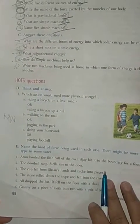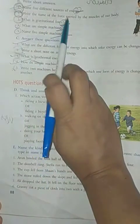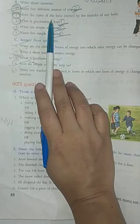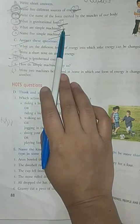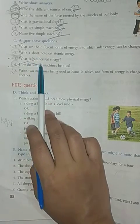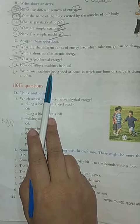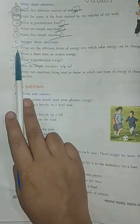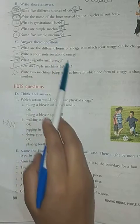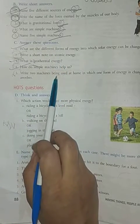These short question answers are given on page number 88, which I assigned to you on August 31st to do in your fair notebook. We will discuss all these question answers today from Part B (write short answers) and Part C (answer these questions). You have to write all the answers in your fair notebook. I will send the pictures of this in the assignment app.